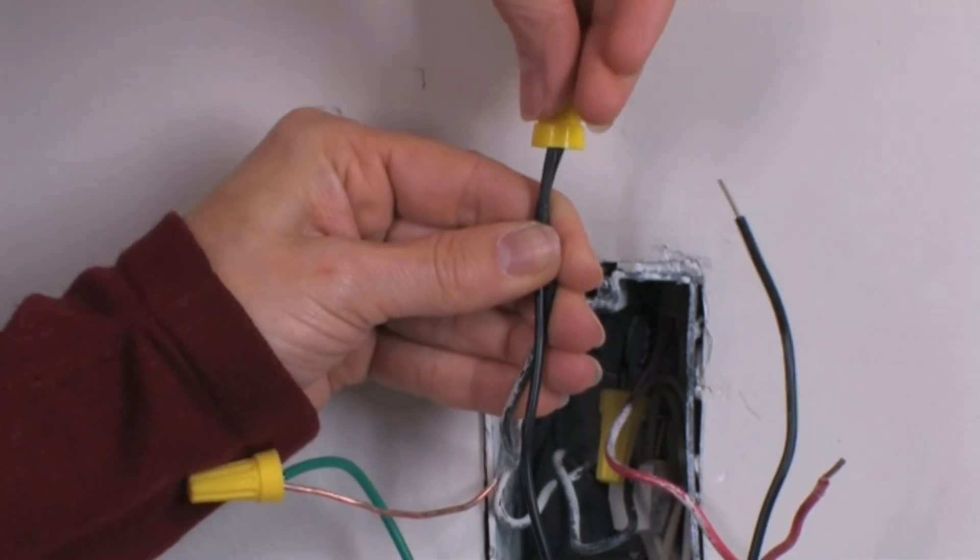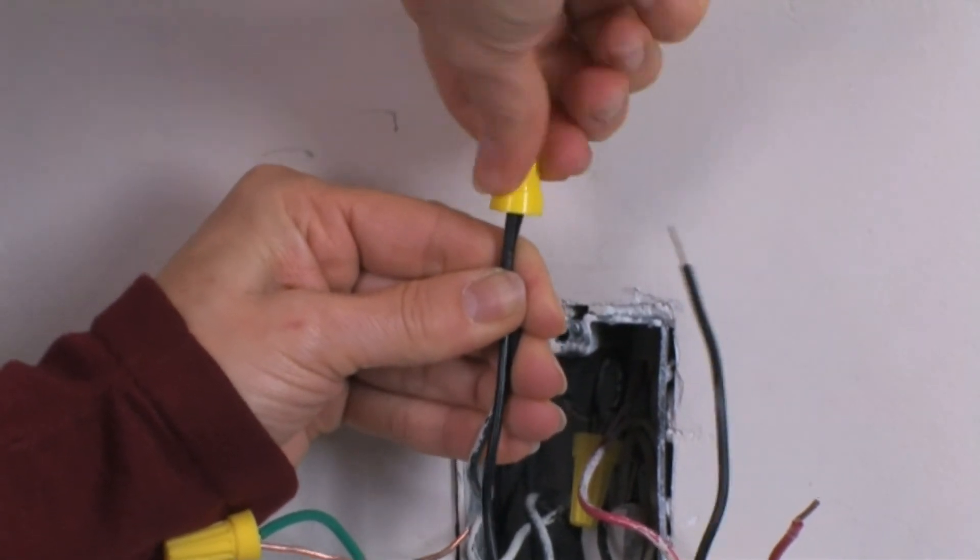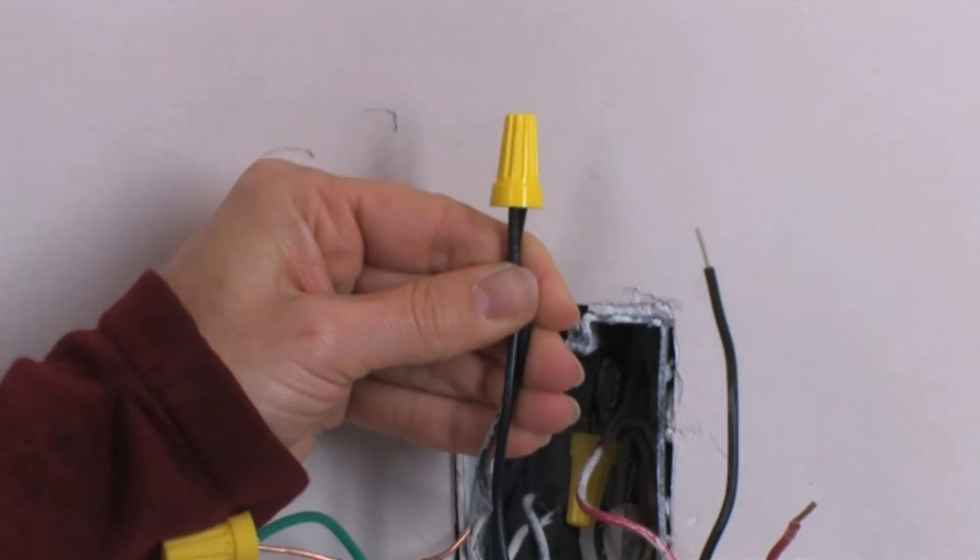Next, connect one of the remaining wall box wires to one of the black wires on your dimmer. Then do the same with the other wall box wire.